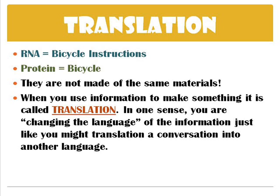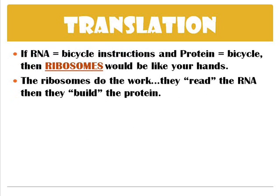In this analogy, RNA is like the bicycle instructions, and the protein that's going to be built is the bicycle. They're not made of the same materials at all. When you use information to make something, it's called translation — you're really changing the language of information, just like translating a conversation into another language. The ribosomes would be like your hands, because ribosomes do the work — they read the RNA and build the protein.